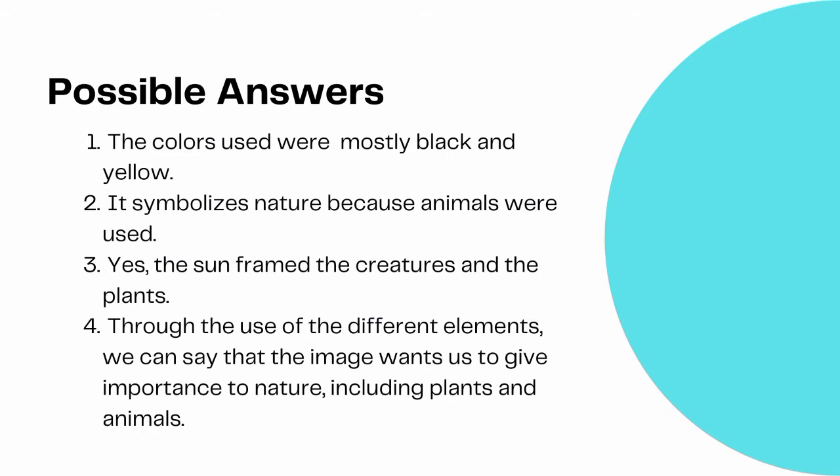Here are some possible answers. Number one, the colors used were mostly black and yellow. Number two, it symbolizes nature because animals were used. Number three, yes, the sun framed the creatures and the plants. And four, through the use of the different elements, we can say that the image wants us to give importance to nature, including plants and animals.